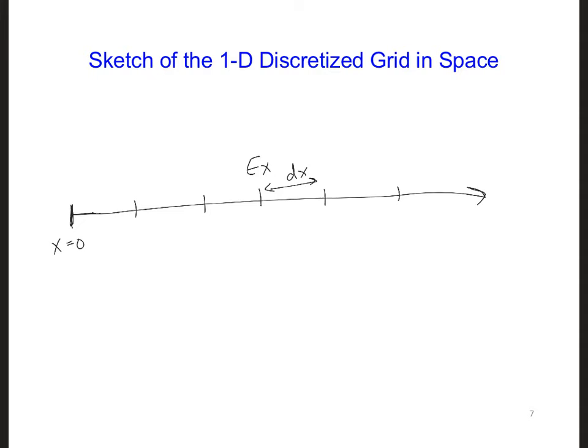And this would be x equal delta x, x equal 2 delta x, and so forth. So these are all the E_z locations.